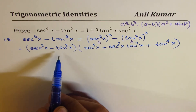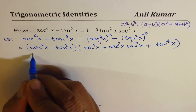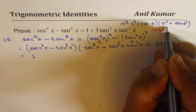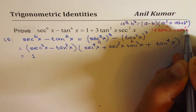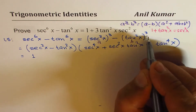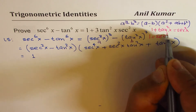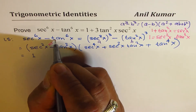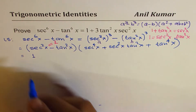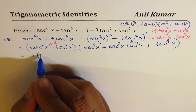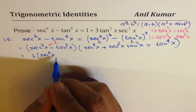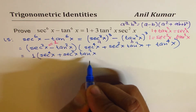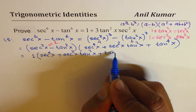Now, secant squared x minus tan squared x equals 1. This comes from the Pythagorean identity: 1 plus tan squared x equals secant squared x. Taking tan squared x to the other side gives secant squared x minus tan squared x equals 1. So we get 1 times secant to the power of 4x plus secant squared x tan squared x plus tan to the power of 4x.